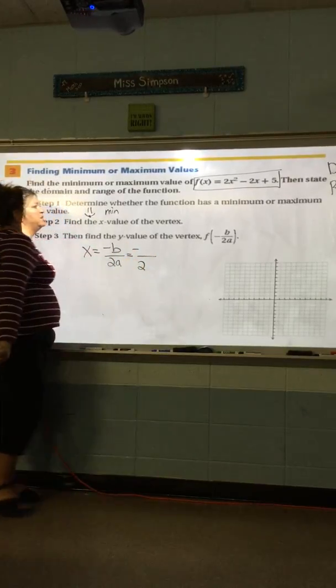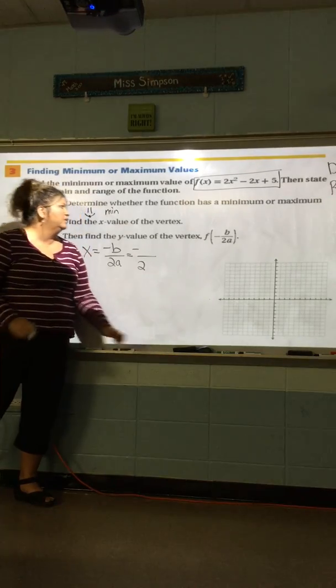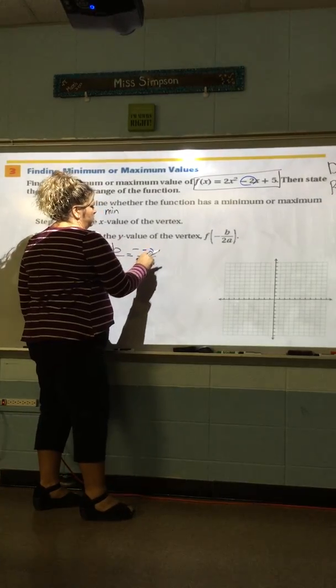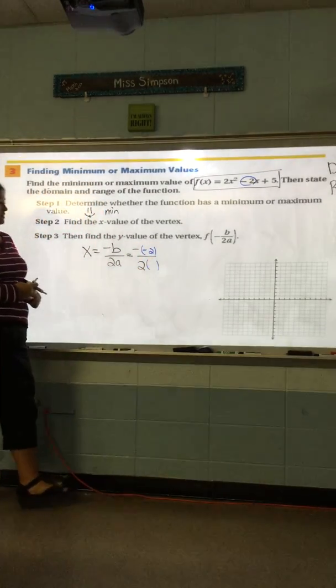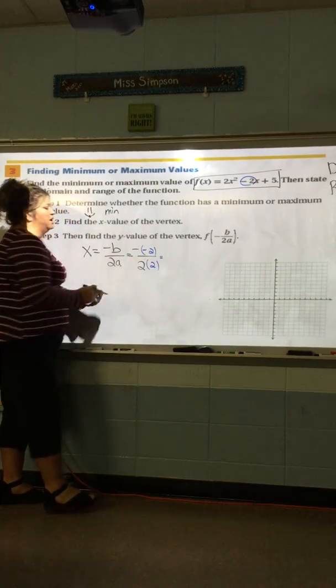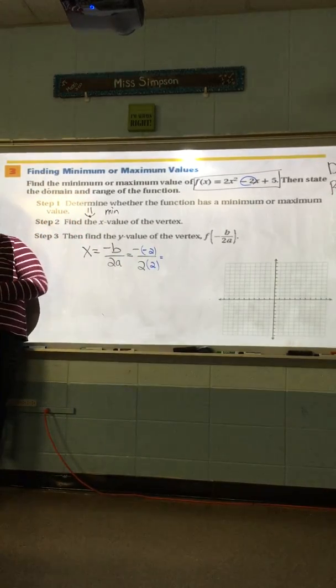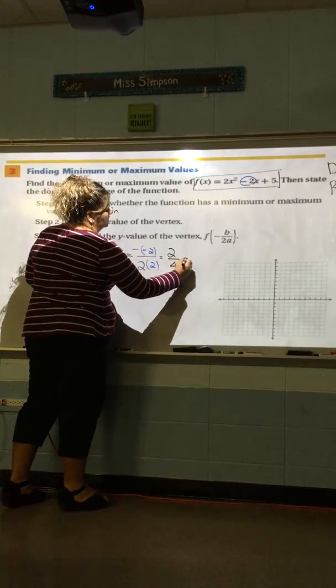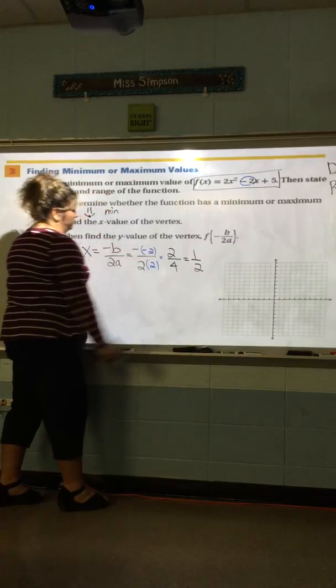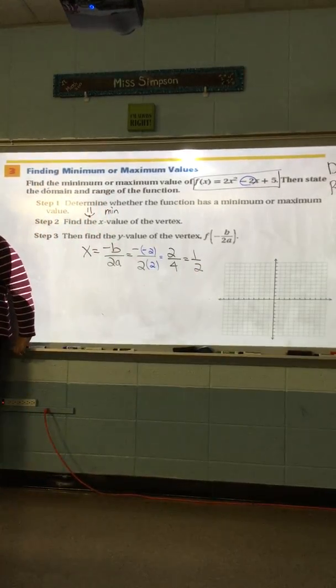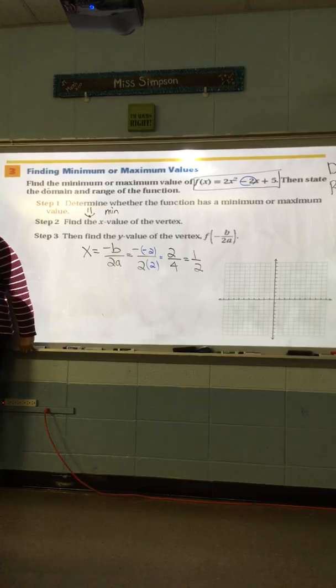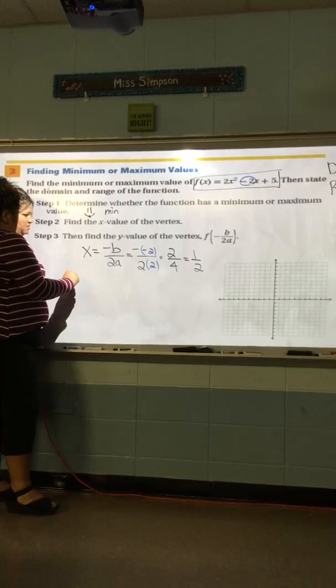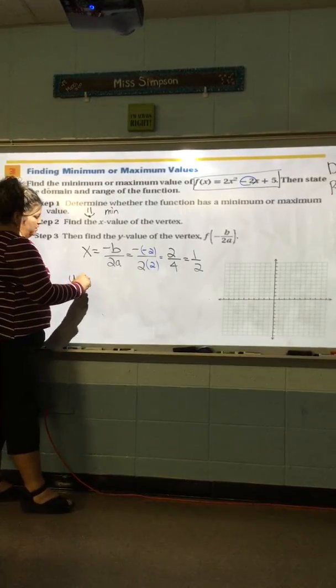So, I'm going to write negative b over 2a. What am I going to plug in for b? Negative 2. Good. What am I going to plug in for a? 2. All right. So, on top, I have a negative times a negative makes positive 2. And on bottom, I get 4, which is 1 half. How does that help me? Am I done? No, I need to plug it into my equation. And what's that going to give me? My y.